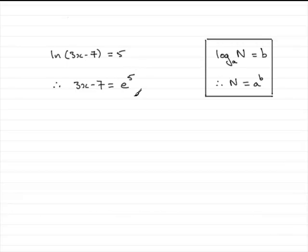Don't use your calculator because this will give a horrible decimal, so just leave it in exact form. So if we now add 7 to both sides, we get 3x equals E to the power 5 plus 7, or you could say 7 plus E to the 5, doesn't make any odds.